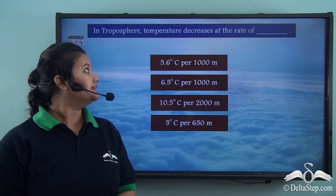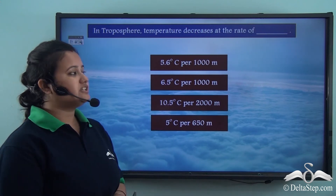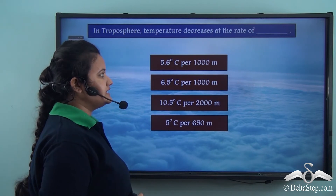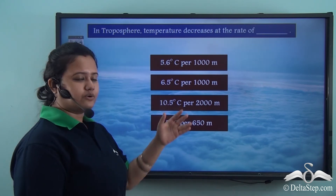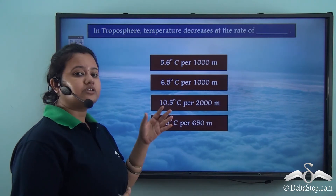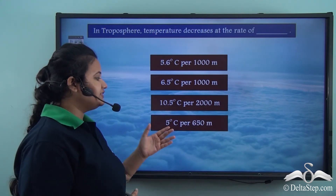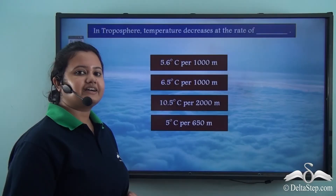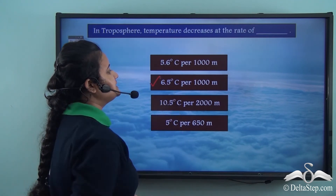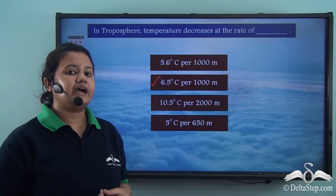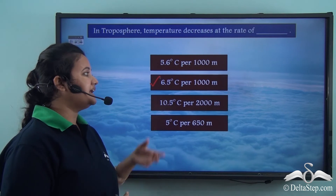In the troposphere, temperature decreases at the rate of 6.5 degrees Celsius per 1000 meters of ascent. This is the correct rate according to the normal lapse rate. Other options — such as 5.6°C per 1000 m, 10.5°C per 2000 m, or 5°C per 650 m — are incorrect.